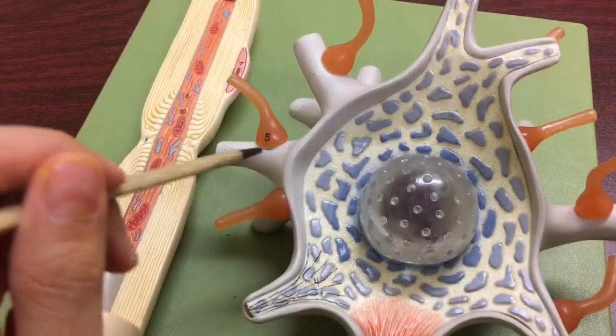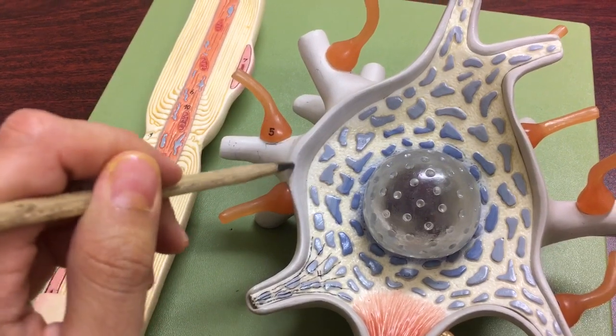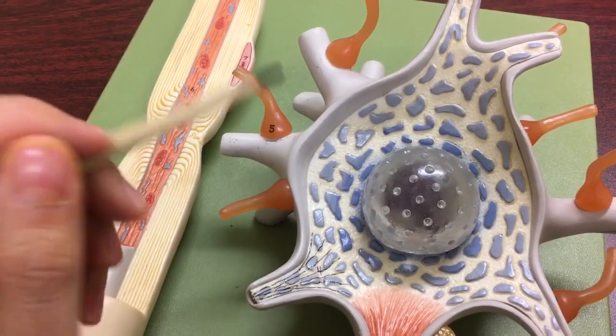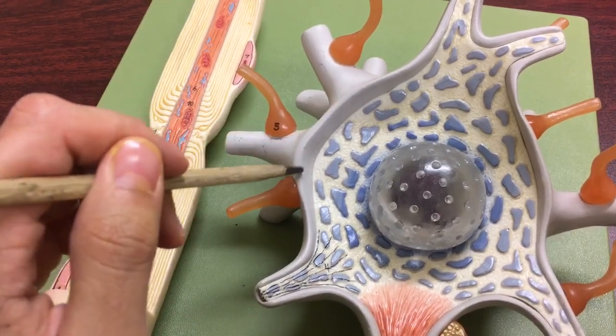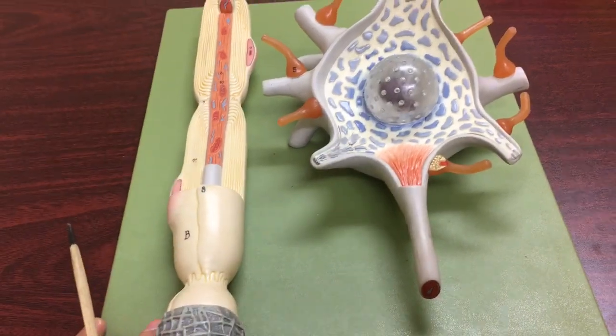And remember the membrane, the cell membrane of the neuron, is called neurolemma in the case of neurons. So we call this the neurolemma, the membrane. Okay, and that is it for this model.